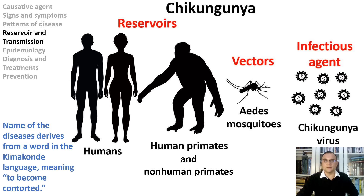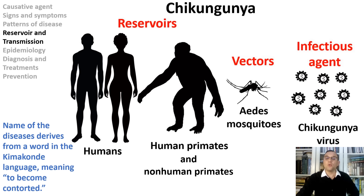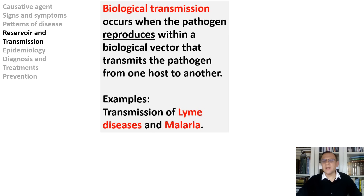Chikungunya virus is transmitted to humans via the bite of an infected mosquito. Mosquitoes become infected when they feed on infected non-human or human primates. Chikungunya virus spreads from human to person only by the bite of a mosquito that has bitten someone who is sick. Symptoms are similar to dengue — pain in joints that can last two years, headaches, and rashes. Diseases can be transmitted by vectors either mechanically or biologically. In biological transmission, vectors such as ticks and mosquitoes not only transmit the infection but serve as a host for infectious agents to multiply.